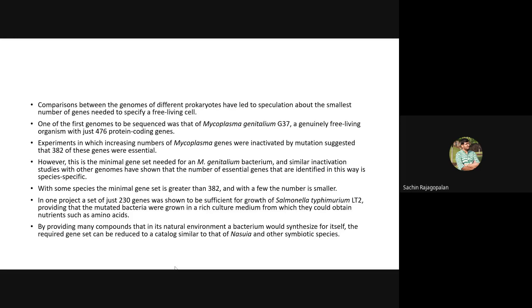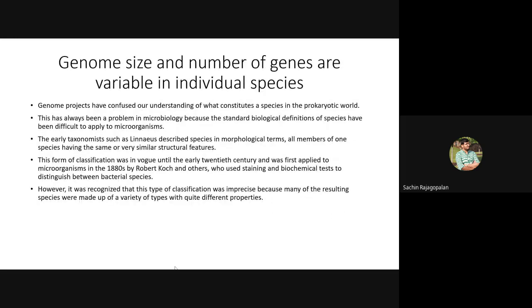We have to understand that as much work as the organism has to do independently, the more genes it will need. Free-living organisms in natural environments normally have more genes because they must synthesize most nutrients themselves. Parasites, on the other hand, get ready-made nutrients from the host, so their number of genes is not going to be high. The genome size and number of genes is therefore variable among individual species.